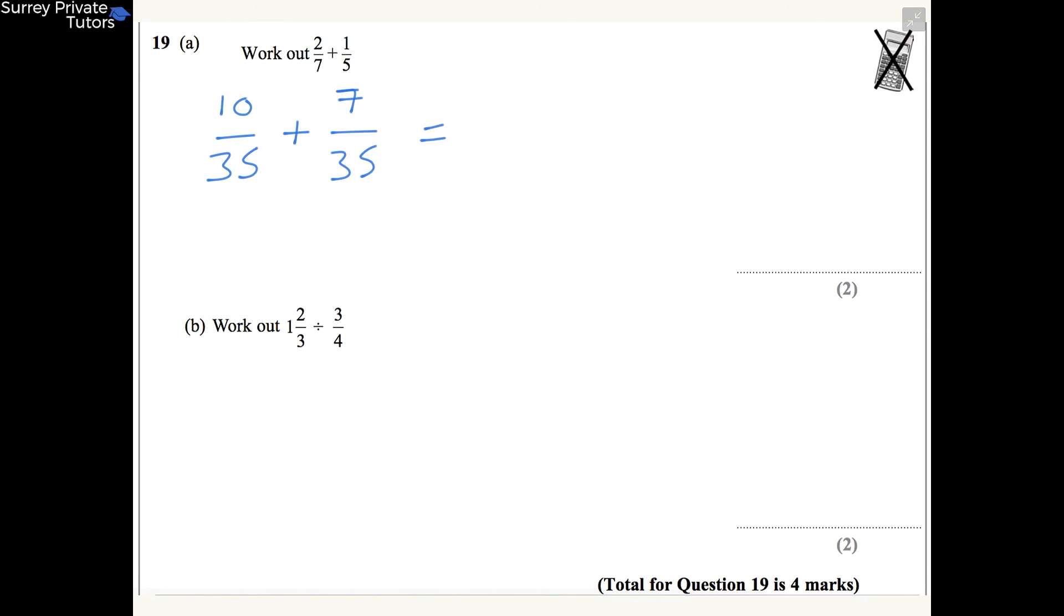And then now we simply just add the numerators, and we get 10 plus 7, which is 17, so we get 17/35 as our final answer. And we can't simplify that any further.